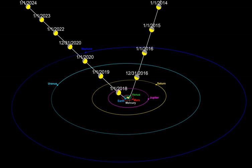Recent research suggests that Asteroid 514107 2015 BZ509 may be a former interstellar object, captured some 4.5 billion years ago, as evidenced by its co-orbital motion with Jupiter and its retrograde orbit around the Sun.